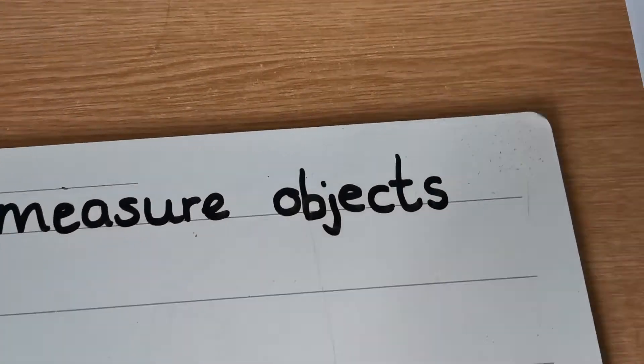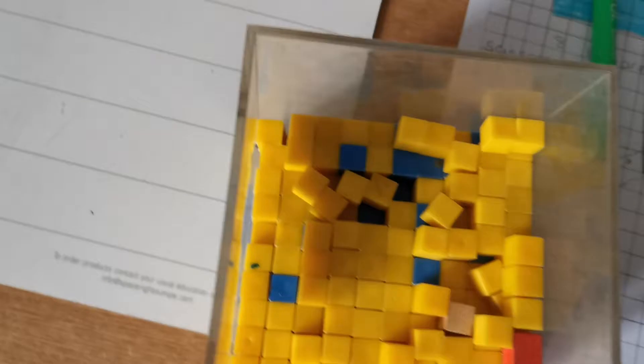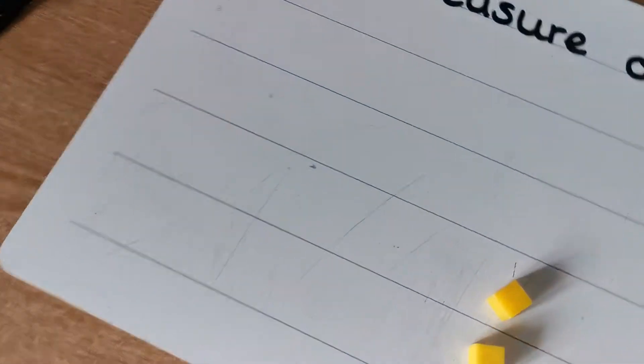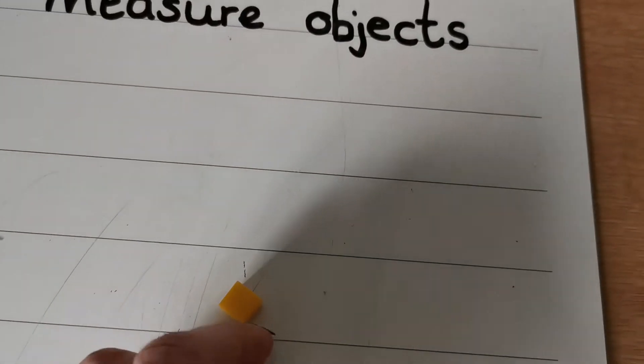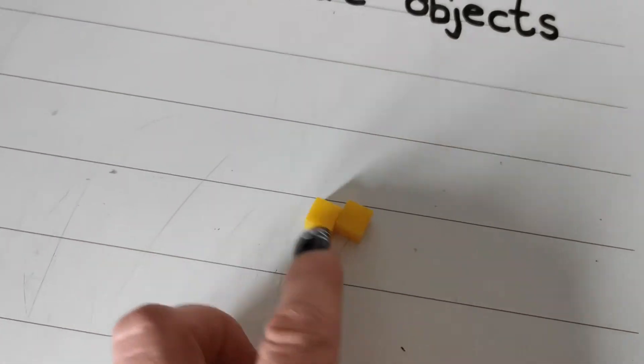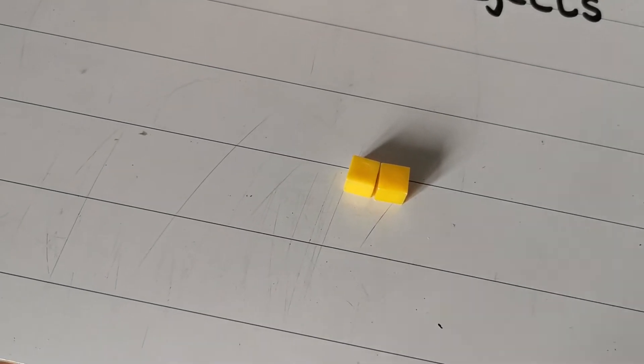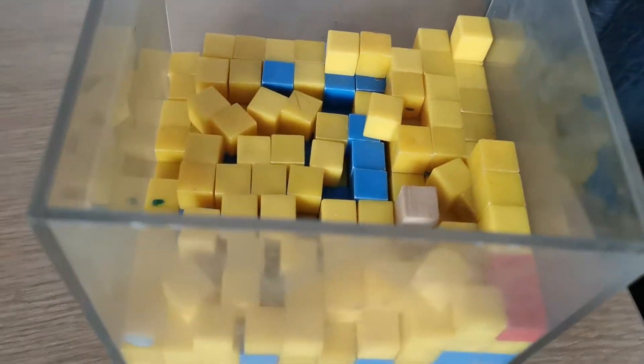So what I mean by that is, if you have any of these at home, and I doubt you do, but you might have something similar. These small cubes that I've got here. If you've got anything like that at home to measure with, you can use those today. So these are little ones cubes that we use when we're counting in tens and ones, but they are all the same size.